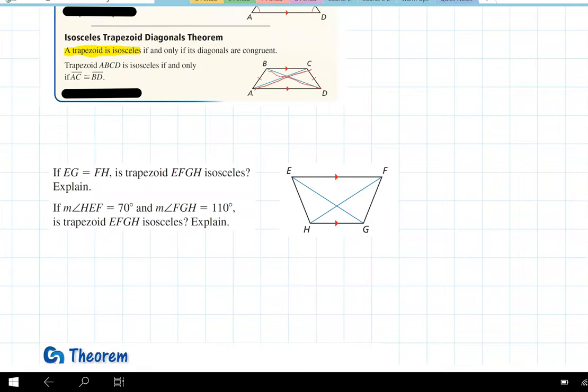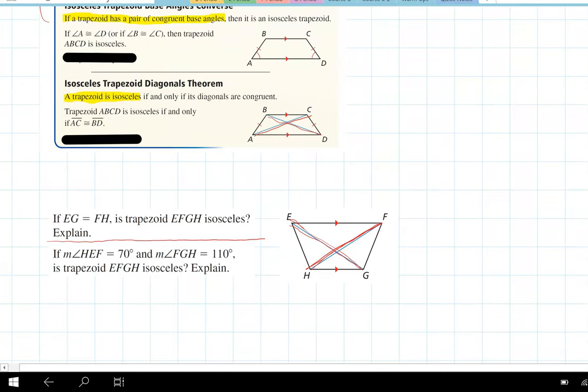So here's an example. This is two different examples. If EG is equal to FH, so EG is this one is equal to FH, is it an isosceles trapezoid? Well, let's go back a second because I read this one and I skipped a part of the statement. It says if and only if. So if and only if means this statement works both ways. If it's isosceles, then the diagonals are congruent. But also if the diagonals are congruent, then it's an isosceles trapezoid. So if this, then this, and if this, then this. So since they're telling us here that EG is equal to FH, yes, we know it's an isosceles trapezoid because of the isosceles trapezoid diagonals theorem.